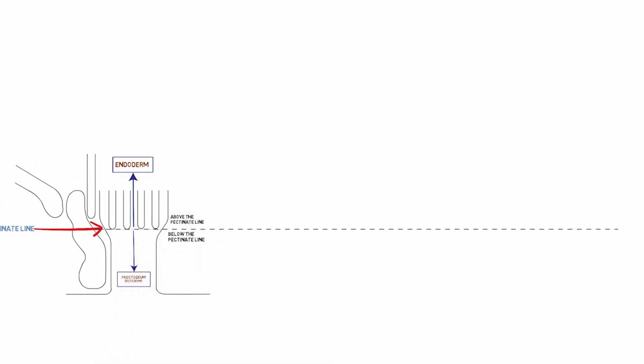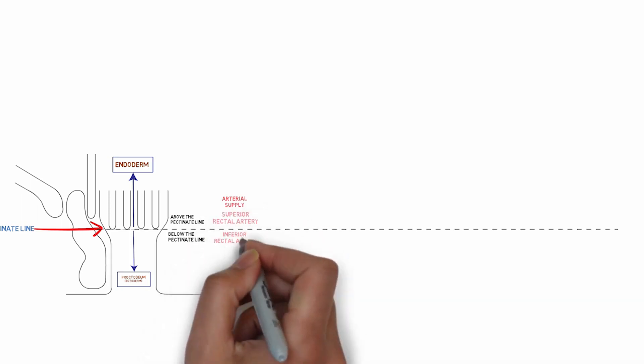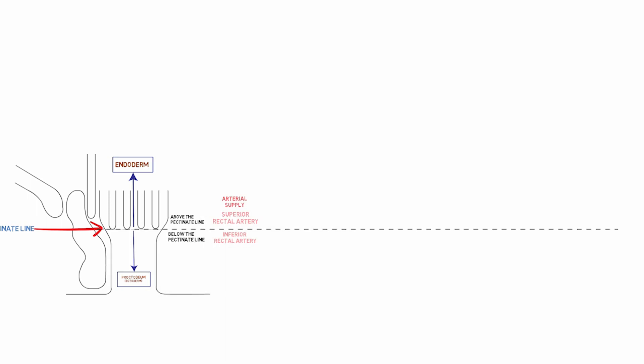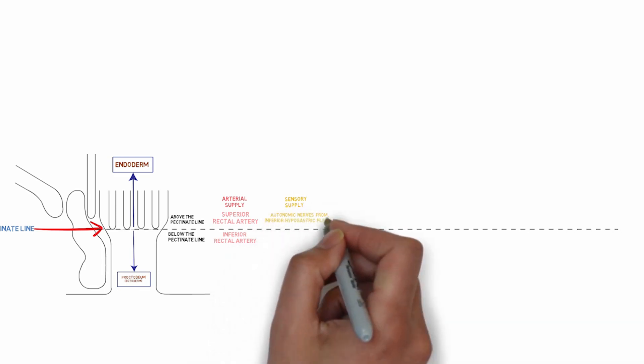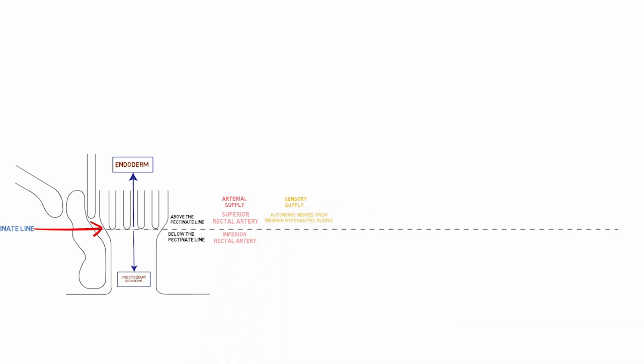Above the pectinate line, arterial supply is from the superior rectal artery; below, it is from the inferior rectal artery. Sensory supply above the pectinate line is from autonomic nerves of the inferior hypogastric plexus, while below it is from the inferior rectal branch of the pudendal nerve. The inferior hypogastric plexus also provides motor supply to the internal anal sphincter, and the inferior rectal branch of the pudendal nerve provides motor supply to the external anal sphincter. Lymph above the pectinate line drains into superior and middle rectal nodes; below, it drains into superficial inguinal nodes.